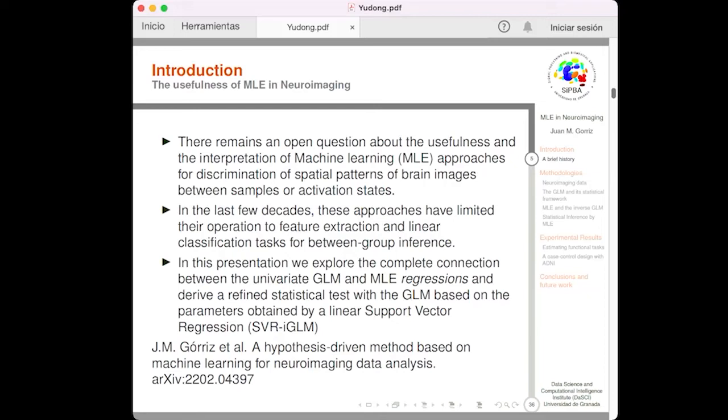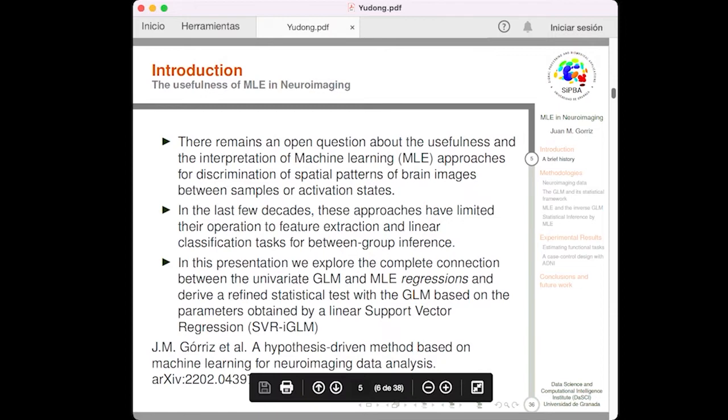However, there remains an open question about the usefulness and interpretation of machine learning methods in neuroimaging, where they are applied to as simple methods for solving binary classification problems. We will explore the complete connection between the GLM, the general linear model, that is commonly used in the neuroimaging field, and machine learning regressions, and derive a refined test within the SPM framework. We call it support vector regression in the inverse GLM. More details about the algorithm and about the proposed methodology are in the paper referenced at the bottom of the slide.